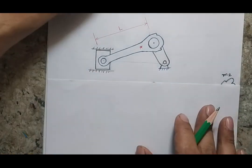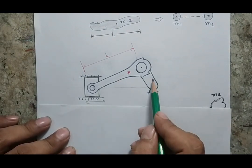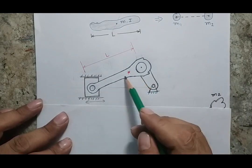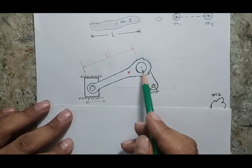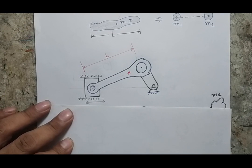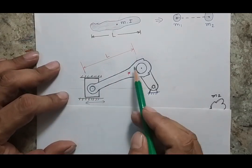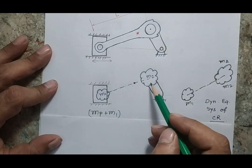Suppose this is our engine system where we have a piston with reciprocating motion connected with a connecting rod, and then finally we have a crank. The shape of the connecting rod is not simple — it is a complicated shape. The piston is moving, the crank is rotating, and the motion of the connecting rod is a mixture of reciprocating and rotational motion. If I want to consider the mass of this connecting rod, one of the simplest methods is to break the complete connecting rod into two masses — one at the piston position and another at the crank position.